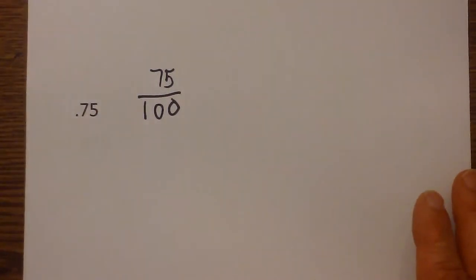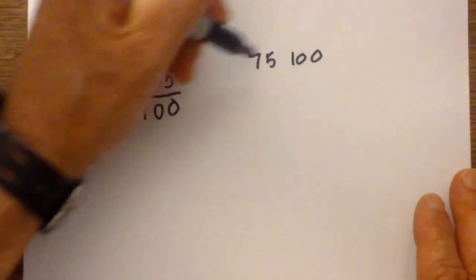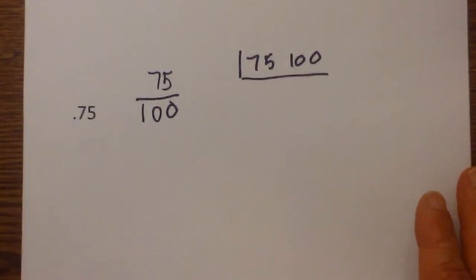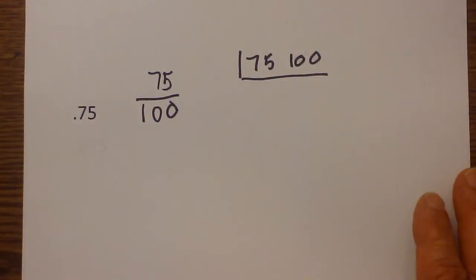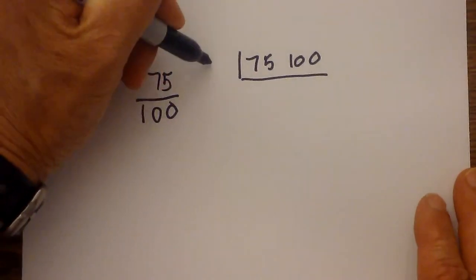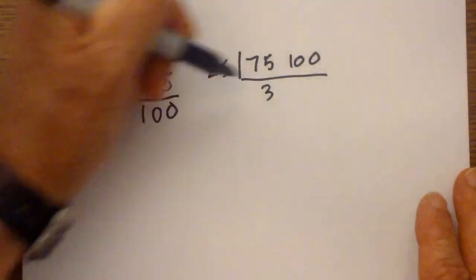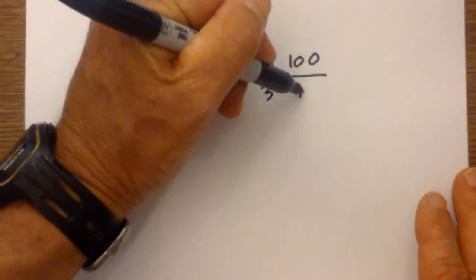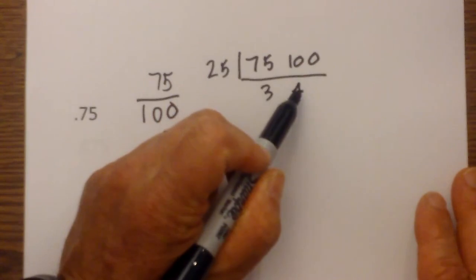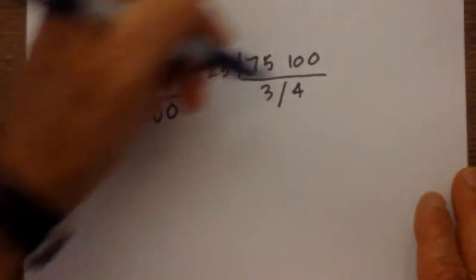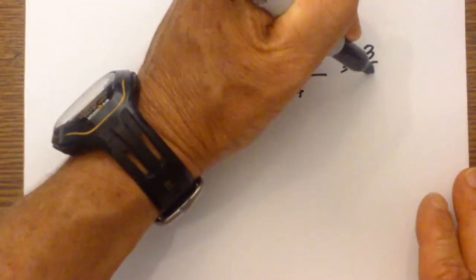I then need to simplify this. Write 75 and 100 and then write a line underneath. Then try to figure out what goes into 75 and 100 evenly. I can use 25 because I know 25 goes into 75 three times and 25 goes into 100 four times. I now have a prime number, and the last test is whether that prime divides into the other number — in this case, no. So 0.75 is equal to three fourths.